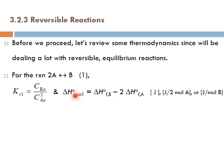The units in this case would be joule, as used in Smith & Van's textbook. Or you can say the quantity calculated is joule per two moles of A reacted, or joule per mole of B produced.